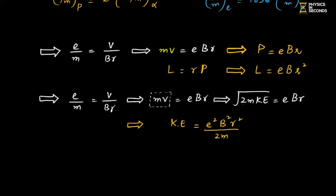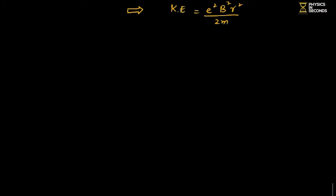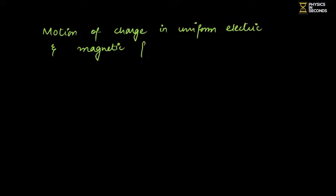Last topic for today: motion of a charge in a uniform electric and magnetic field. We studied magnetic field alone earlier; now we consider a region where both electric field and magnetic field are present and examine what happens.